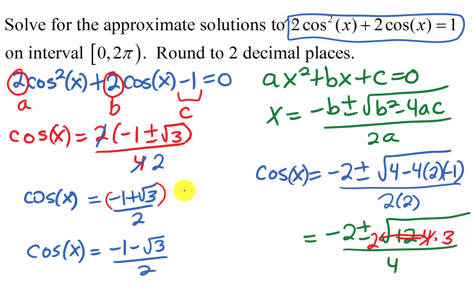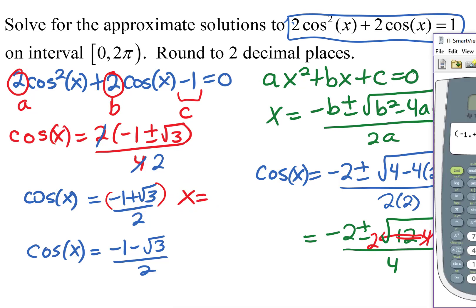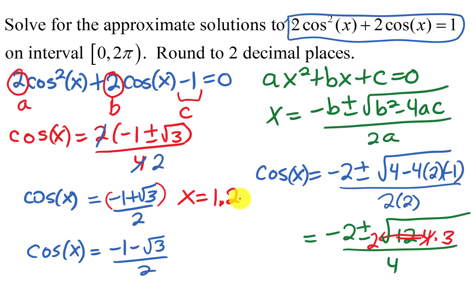Taking the inverse cosine of that value gives x equals approximately 1.196, which rounds to 1.20. That's one solution. Remember, inverse cosine gives one answer, but since cosine is positive here, the angle is in quadrant 1. There's also a matching angle in quadrant 4 with the same positive cosine value.